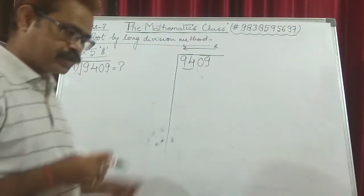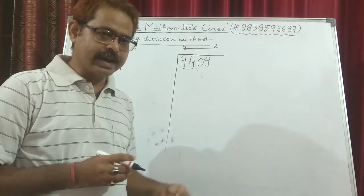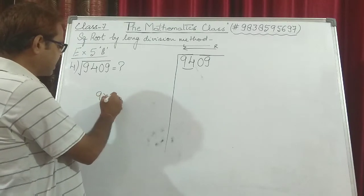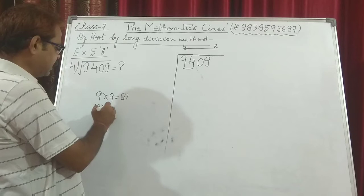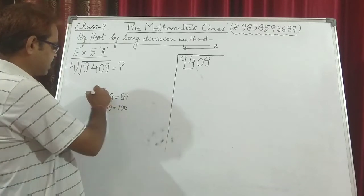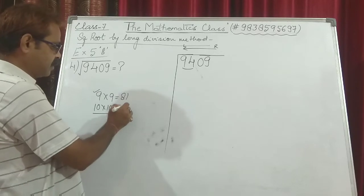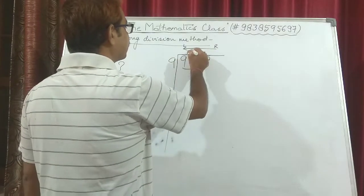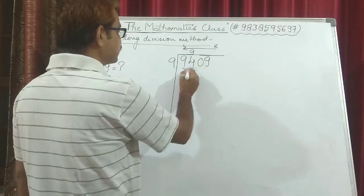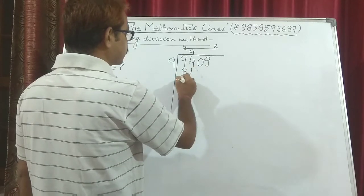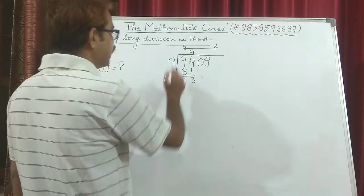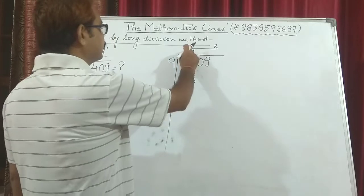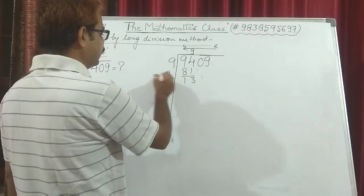We need a number which when multiplied by itself gives 94 or less than 94. We know 9 into 9 is 81 and 10 into 10 is 100, so we cannot use 10. We use 9: 9 times 9 is 81. The remainder is: 4 minus 1 is 3, and 9 minus 8 is 1, giving 13. This 9 is then added to this 9, giving 18.